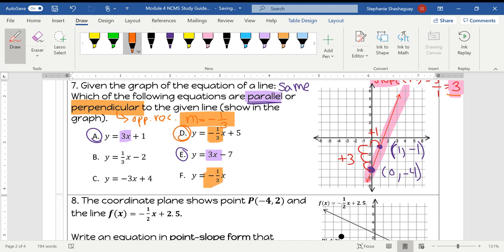Ones that have the equation of negative or slope of negative 1 third are right here and right here. So these two lines would be perpendicular to the given line. Those are my four correct answers.